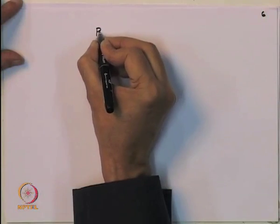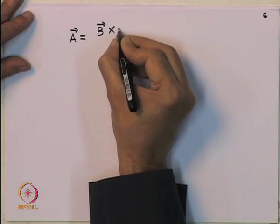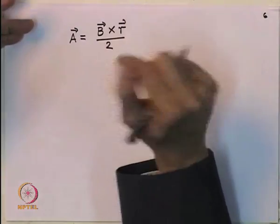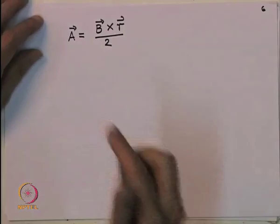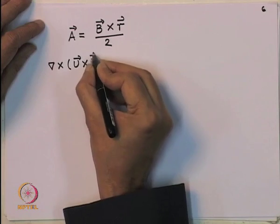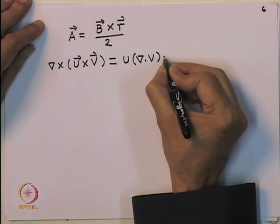We continue with examples of the vector potential. Let us calculate the vector potential for a situation where the magnetic field is constant, which is very useful in many experiments. For a constant field B, the vector potential A is given by B cross R over 2. Using the vector identity del cross (u cross v) equals u(del dot v) minus v(del dot u), we can verify this.